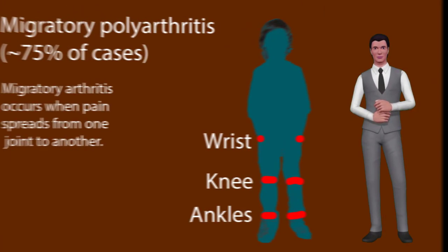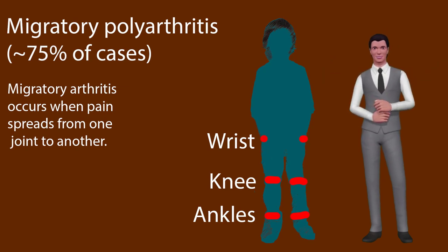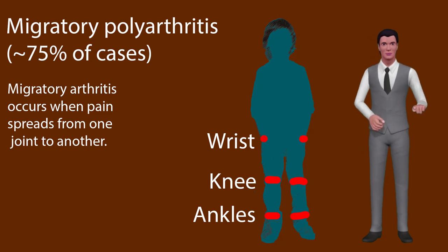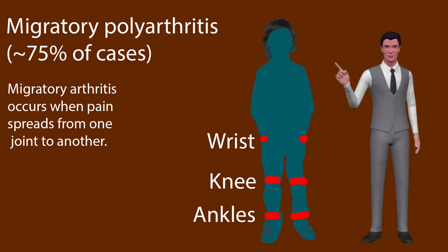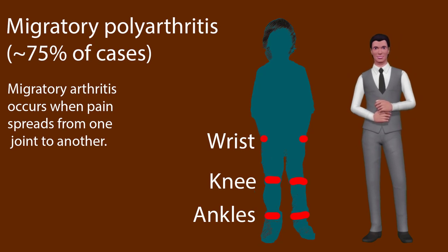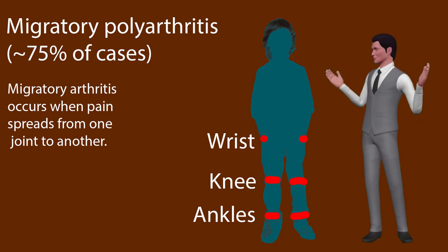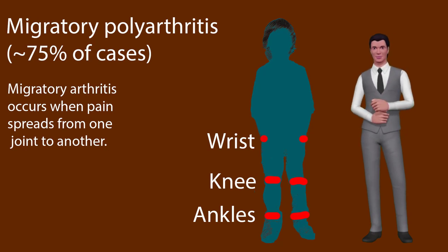Clinical findings include fever, painful joints with the affected joints changing over time, involuntary muscle movements, and occasionally a characteristic non-itchy rash known as erythema marginatum. Migratory polyarthritis occurs in approximately 75% of cases and is the most common initial presentation of acute rheumatic fever. Arthritis involves the large joints — knees, ankles, and wrists — with no permanent joint damage. Pain responds to aspirin, which is a characteristic finding.